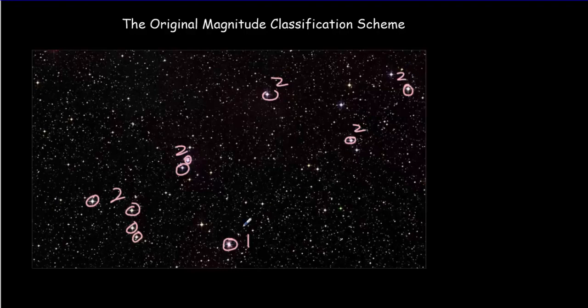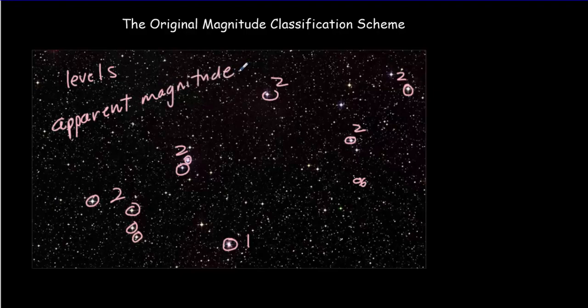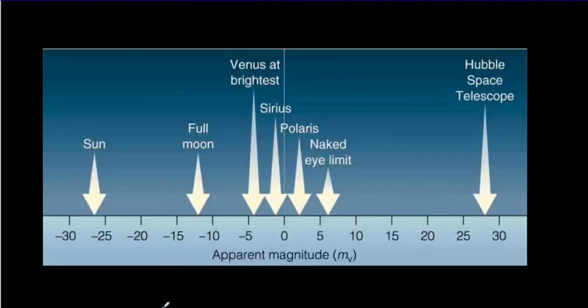And then we'd continue on and look for the level three stars. They ended up making six different levels, from one to six. The sixth level would be the faintest thing that you could see in the night sky. Maybe this one here would be a level six, you can hardly even see that there's anything there at all. These levels were called apparent magnitude.